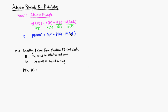Using the addition principle, this is going to be the probability of selecting a red card, plus the probability of selecting a king, minus the probability of selecting a red card and a king.